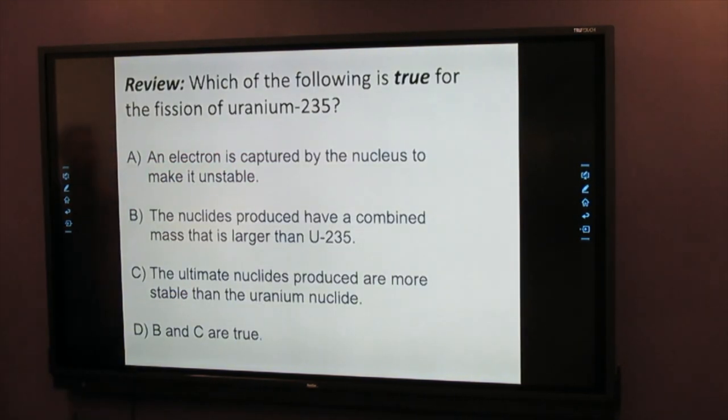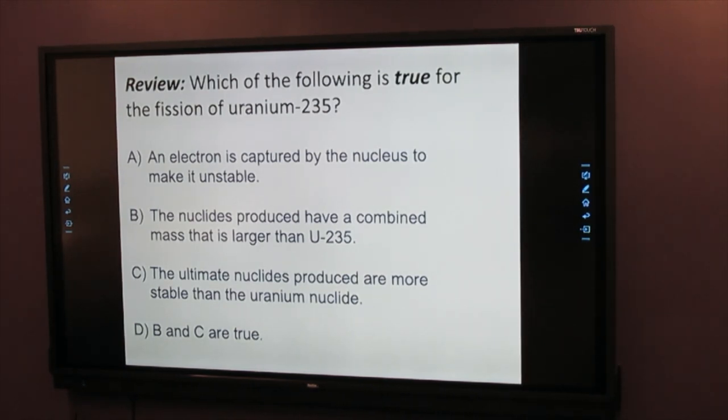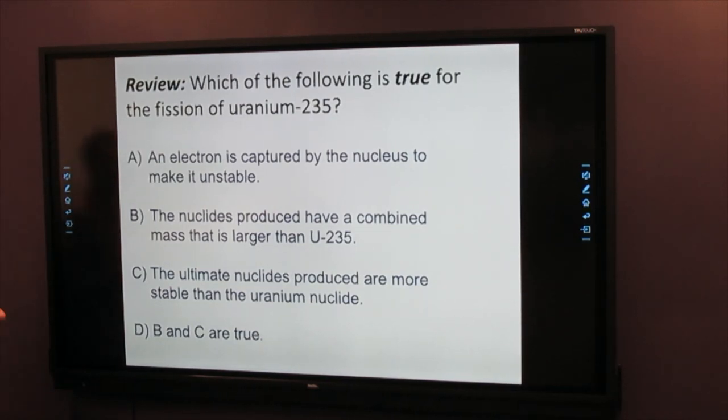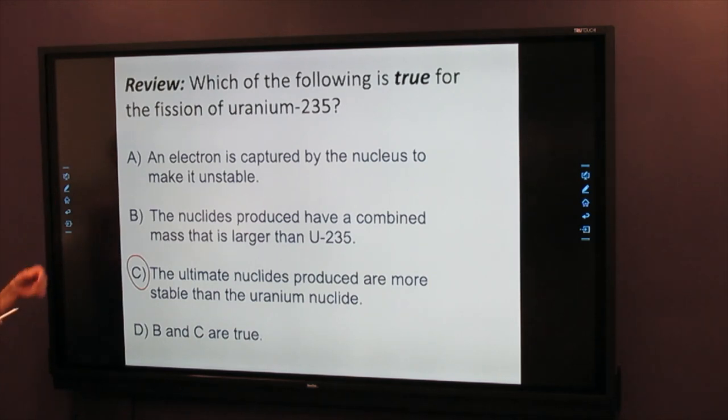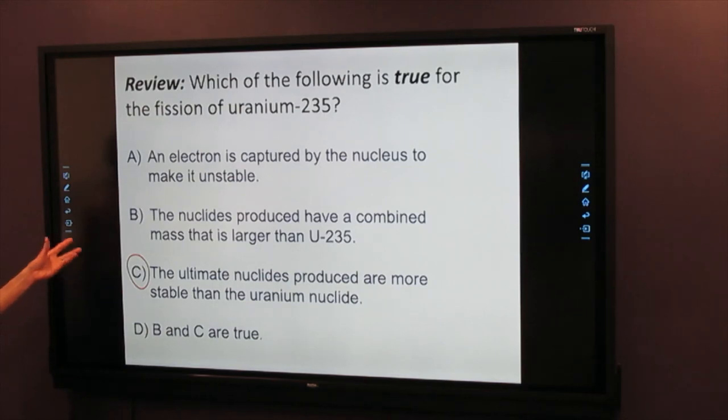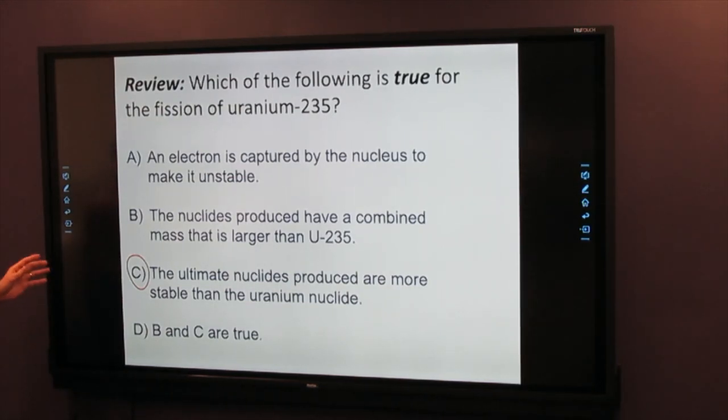Here's a quick review question, thinking about uranium-235. Pause the video and try this question. The only true statement on this one is statement C. The ultimate nuclides are more stable than the original U-235. And so, the new products you make, whether it be barium, krypton, or other products also involved, you're going to a more stable place. That's what drives radioactivity.